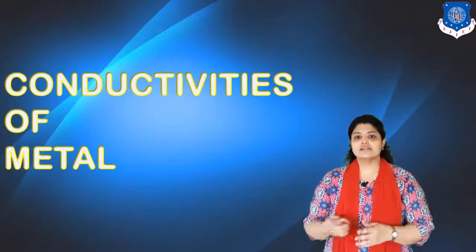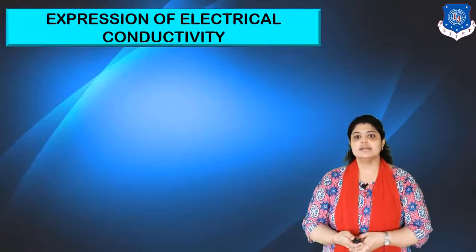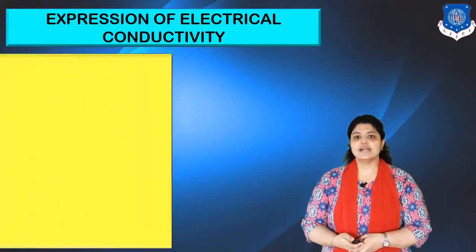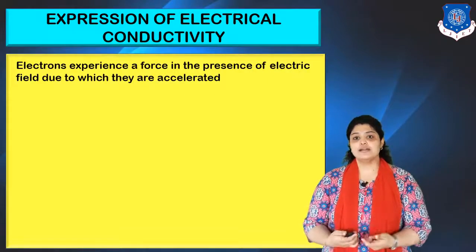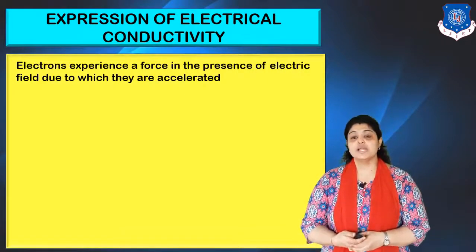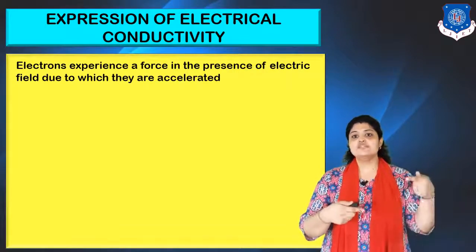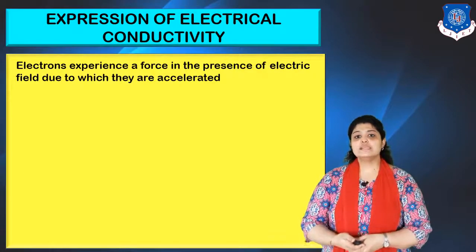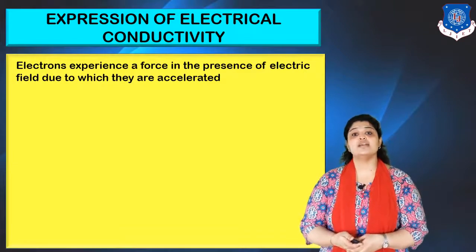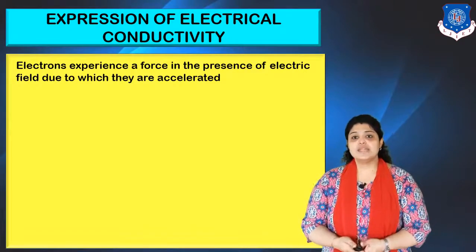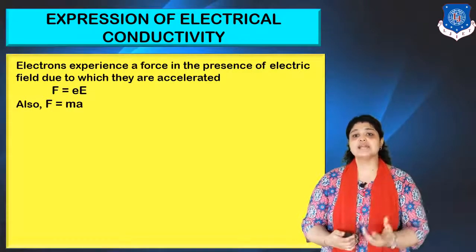We know what electrical conductivity is — it is the property which easily allows the flow of electric current. Let's see how electrical conductivity is derived. Electrons get drifted when we apply an electric field. Suppose we apply an electric field E to a conductor; the electrons will drift in the opposite direction. Electrons experience a force in the presence of an electric field due to which they are accelerated, giving the equation F = eE, where E is the applied electric field.